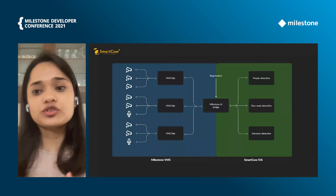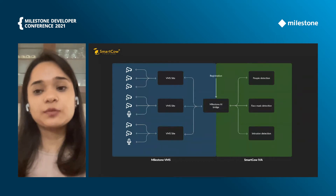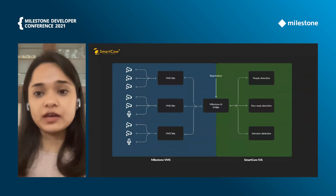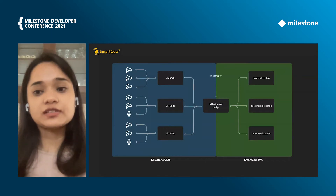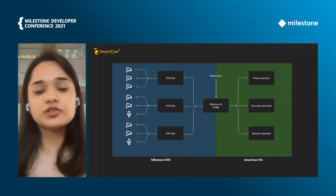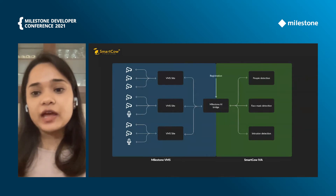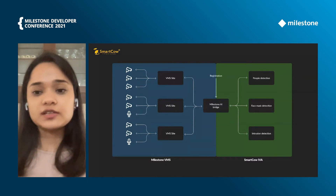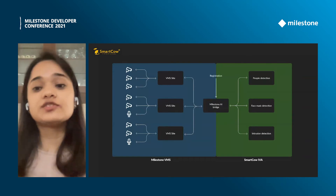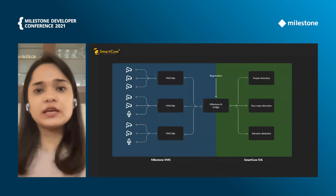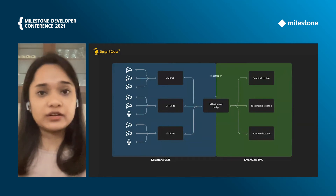Once the AI Bridge runs successfully, it exposes a GraphQL API that we can then access. This allows us to query the devices and all related attributes configured by the VMS. And that's it — we are then able to create users and assign analytics applications to the VMS running on the Milestone system server. It's basically a very simple four-step process which gets the whole system up and running.